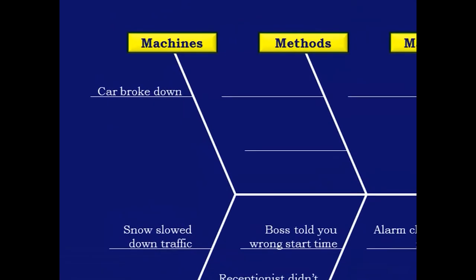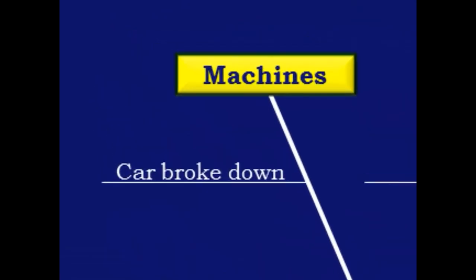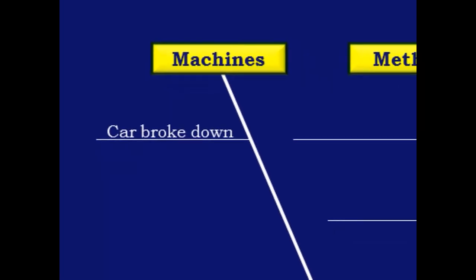Machines are simply the tools of your trade. The obvious machine that you use to get to work on time is your car. But several others probably play a role in your timeliness. Your garage door opener, your coffee pot, and even the stoplights along your route all are machines that affect your travel.